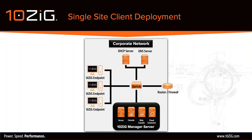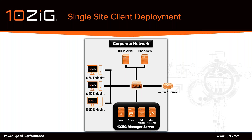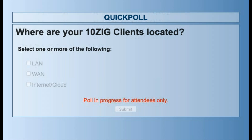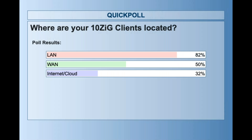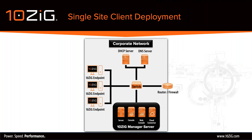We'll throw in another poll to understand where your clients are physically located. The results show that for the most part clients are managed within a LAN, but also quite a high percentage on WAN and Internet/cloud. A good across-the-board result — really interesting to see.